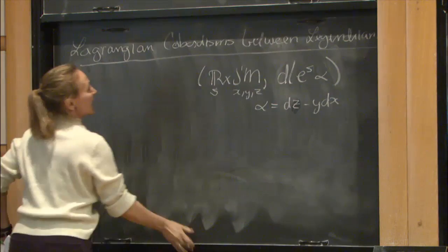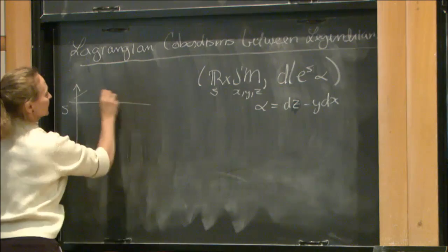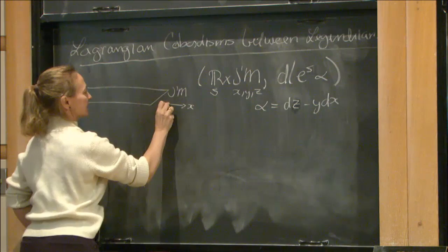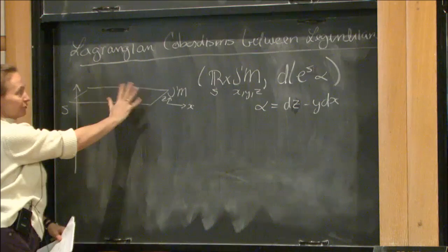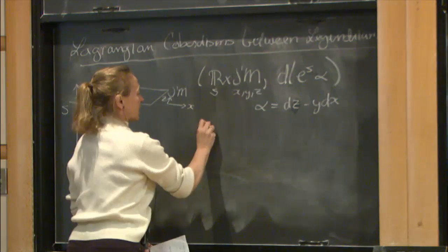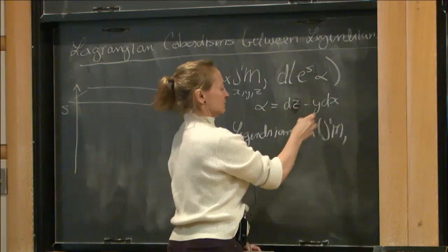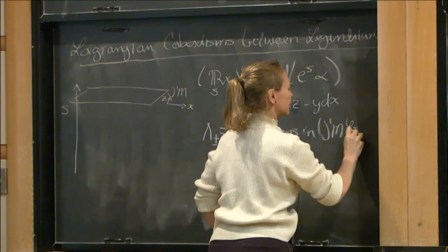Alpha is my standard contact form, dZ minus y dx. I'll usually draw these pictures with the S direction increasing. So sometimes I'll draw these slices — this is my J¹(M). Usually my pictures will have this as sort of my x, my z, and kind of a y that I can't really see. A lot of times I'll just be drawing front projections of things here.